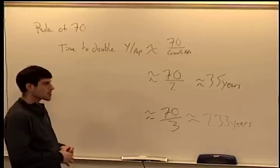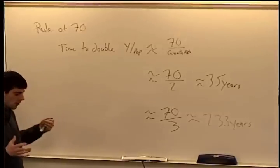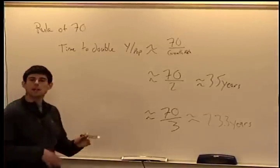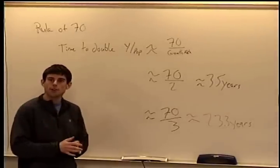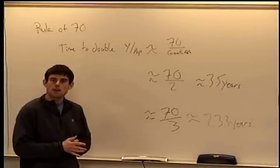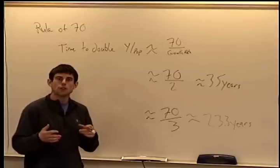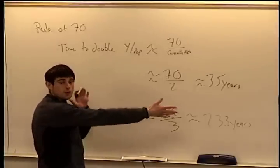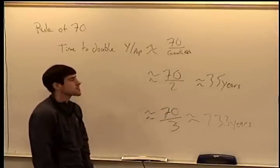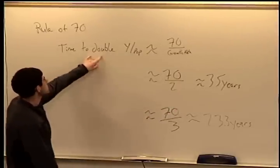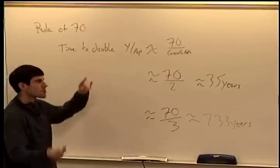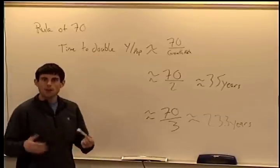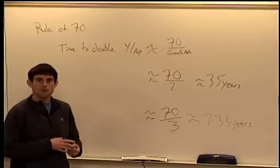When thinking about growth, we're not thinking year-over-year, but these year-over-year differences make big differences over longer stretches. The Rule of 70 helps us wrap our heads around that compounding factor.